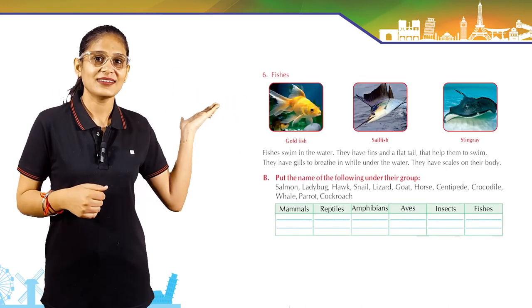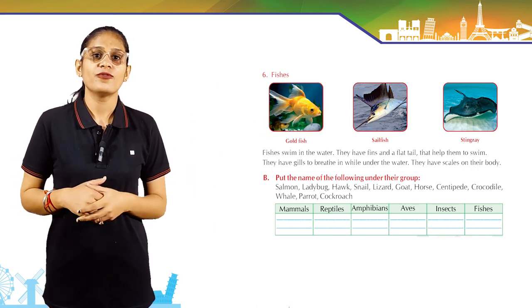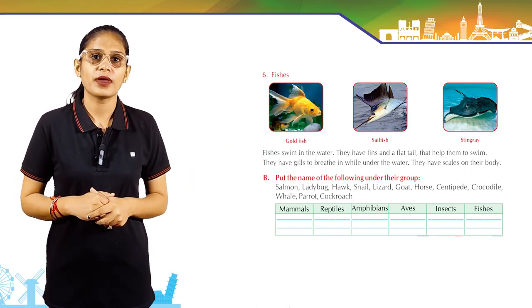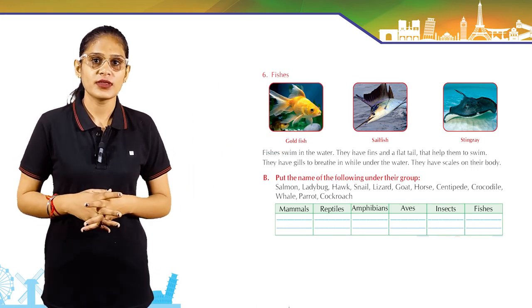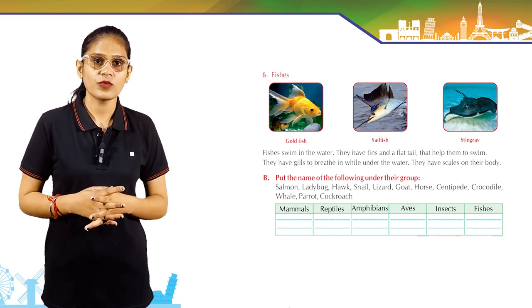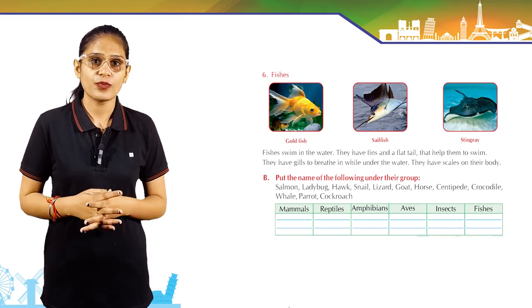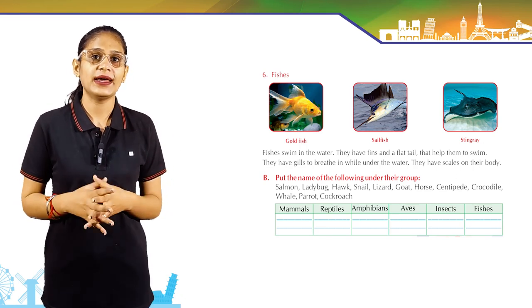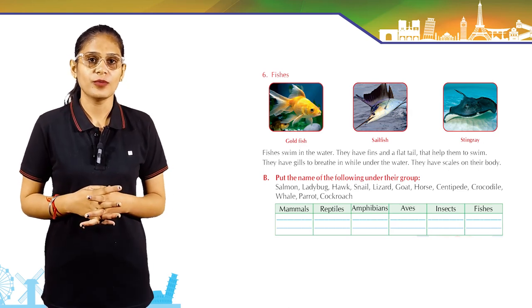Fishes: goldfish, shellfish, and stingray. Fishes swim in the water. They have fins and a flat tail that helps them to swim. They have gills to breathe while under the water. They have scales on their body.